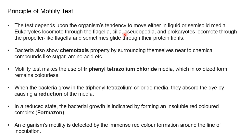This is an important difference for viva questions: eukaryotes locomote through flagella, cilia, and pseudopodia. In case of prokaryotes, locomotion is through flagella only — predominantly through flagella.